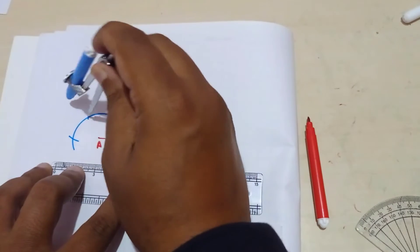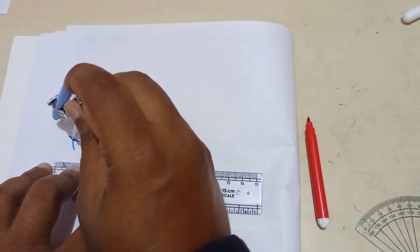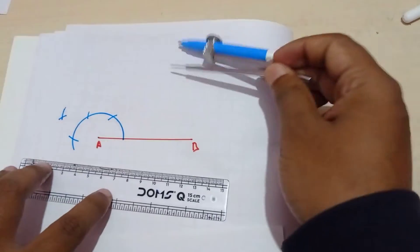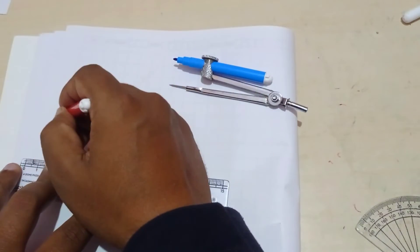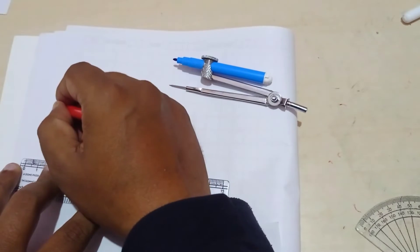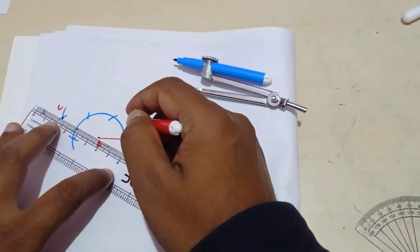Now from this point you cut here one arc, then from here cut one arc. Now we are getting this point and this point you just join. This point is C. So I am going to join.